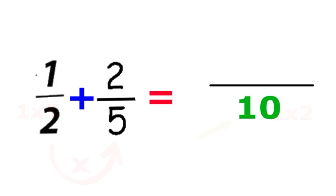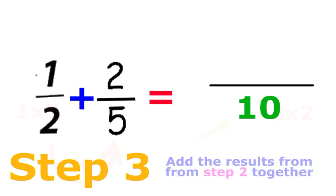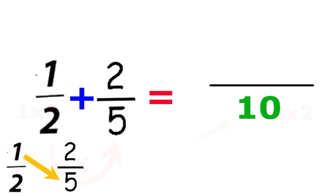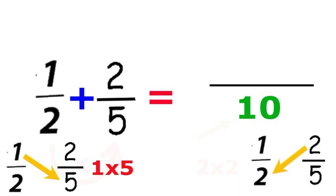In step three, we add the results from step two together. We multiplied the left numerator by the right denominator, which was one times five, and then we multiplied the right numerator by the left denominator, which is two times two.